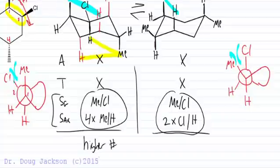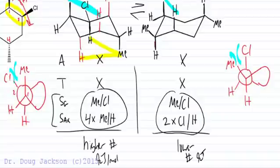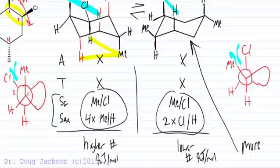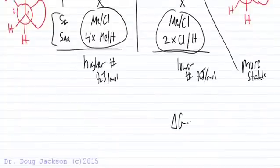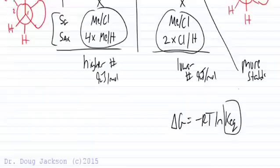Adding up the strain values from a table: the left conformer has one methyl-to-chlorine gauche plus four methyl-to-hydrogen diaxial interactions; the right conformer has one methyl-to-chlorine gauche plus two chlorine-to-hydrogen diaxial interactions. The left conformer totals a higher number of kilojoules per mole, so the right conformer has less strain, is lower energy, and is more stable. Its more negative delta G means a larger equilibrium constant — it exists more of the time.